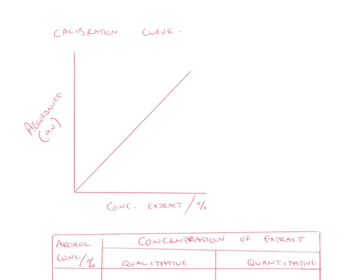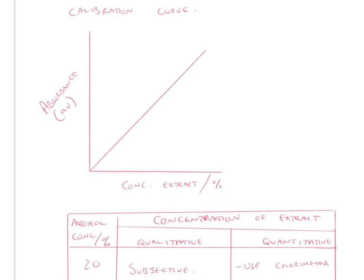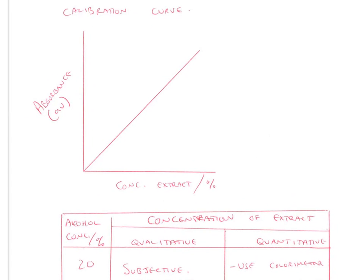So what can you do with the results that you've got? Well, the first thing you can do with your serial dilution is a calibration curve. Our known concentrations — our serial dilution of concentration extracts — going from zero to 100%, we measure the absorbance of each using a colorimeter, then plot the calibration curve.